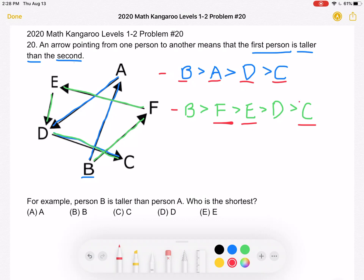So person C is the shortest, which means that answer choice C is correct. Thank you so much for watching and please subscribe if you would like to see more videos.